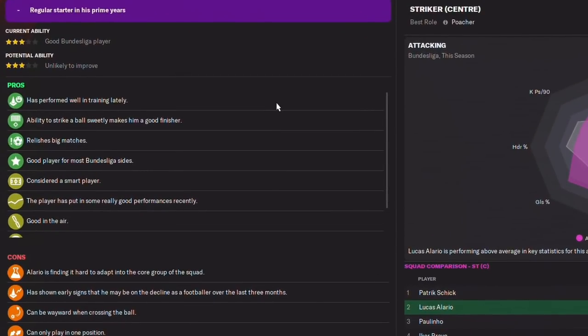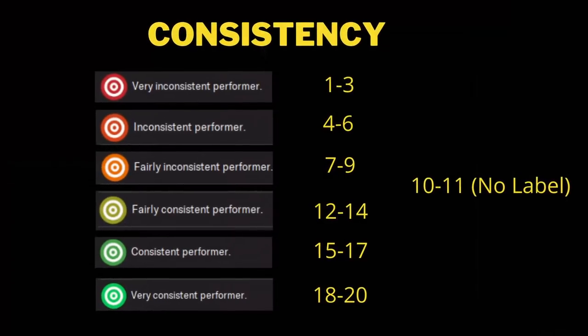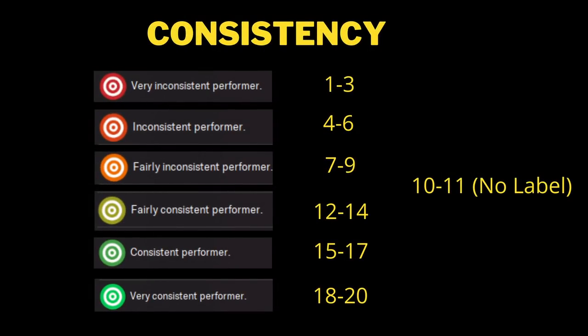This attribute is something that SI have tried to incorporate into the game, and they call it the consistency attribute. Like any other attribute in the game, it scales from 1 to 20. There are several ways this could be described in the game and will come out through your coaching reports — a player could be described as very inconsistent or very consistent. A player who is 10 or 11 in terms of consistency, the coaches won't say anything about him; you probably won't even know whether he's consistent or not.